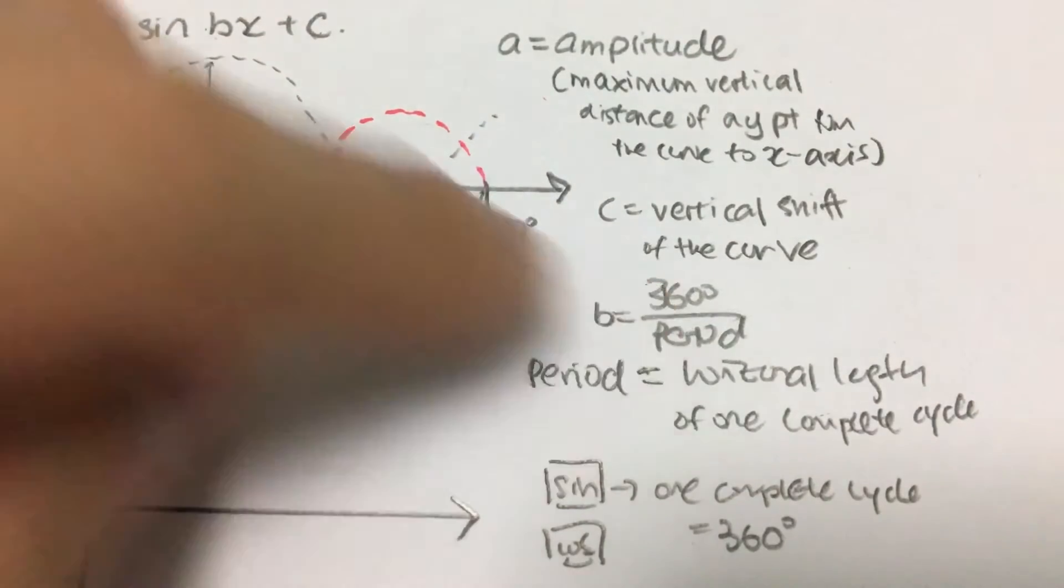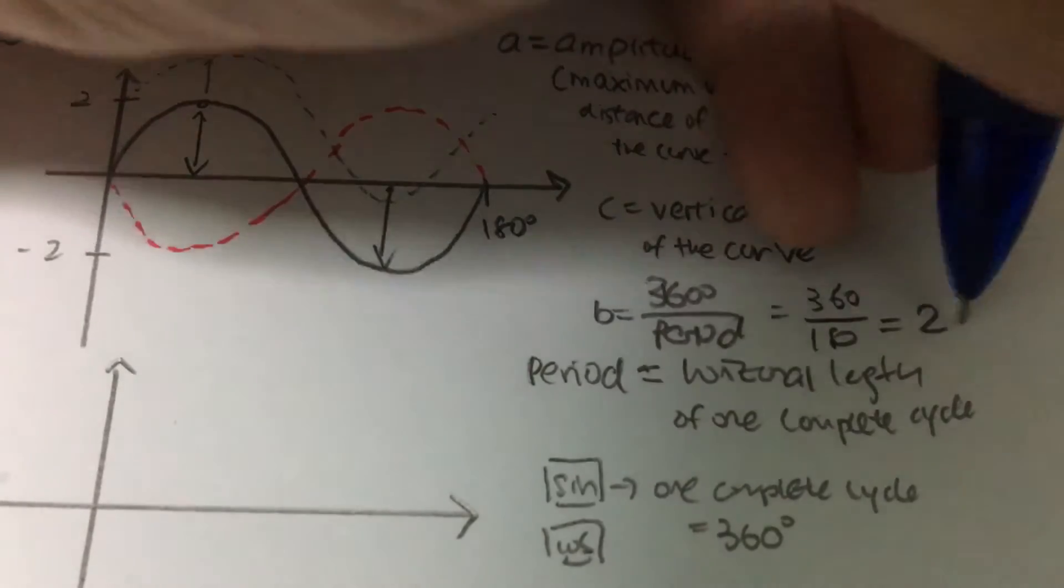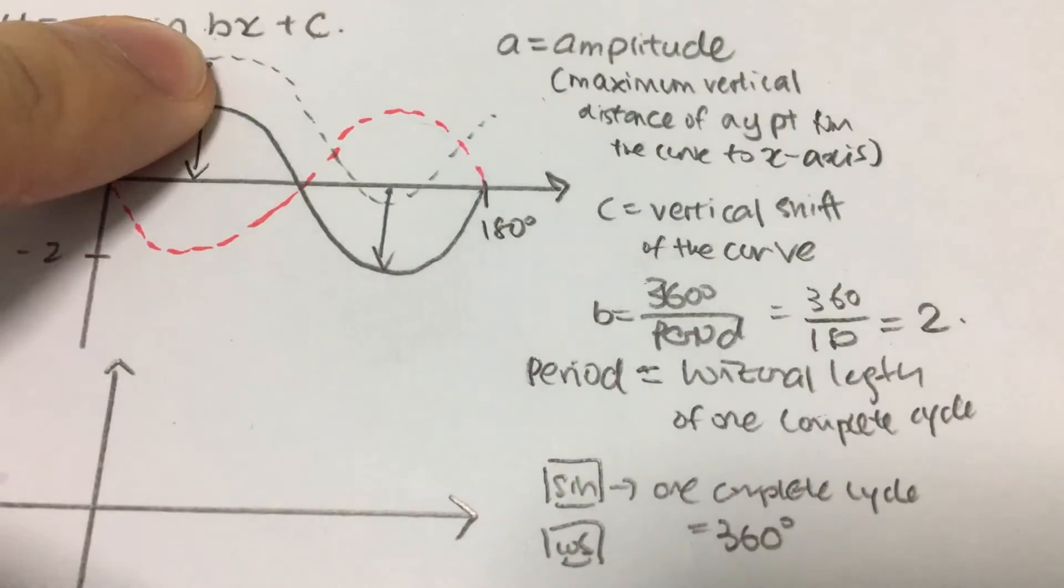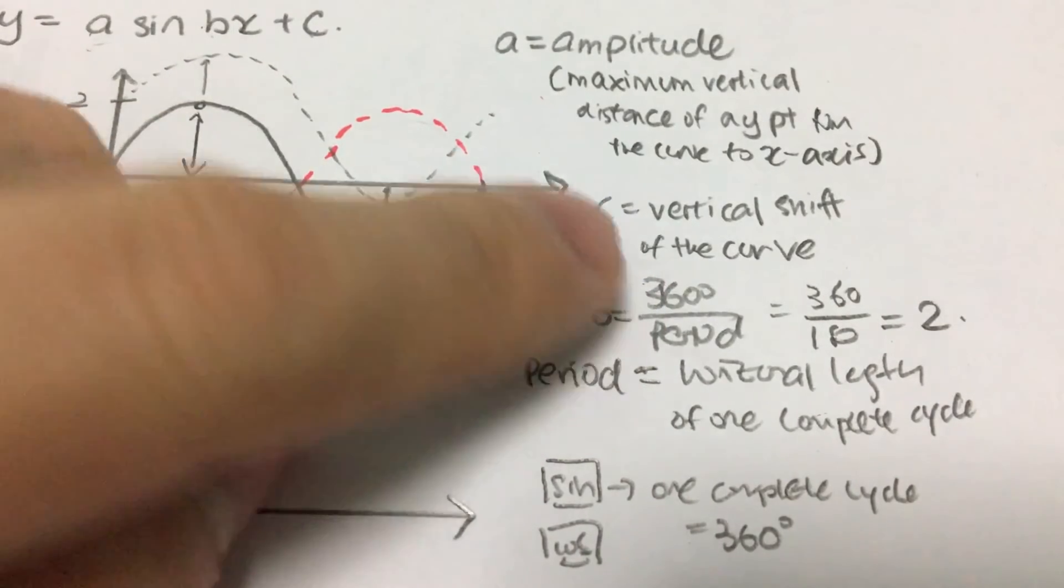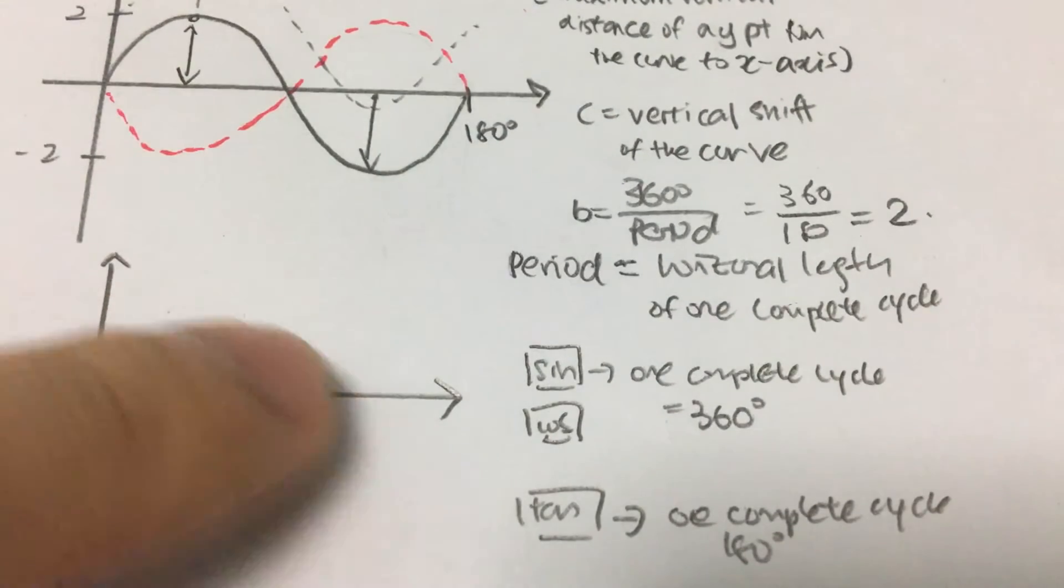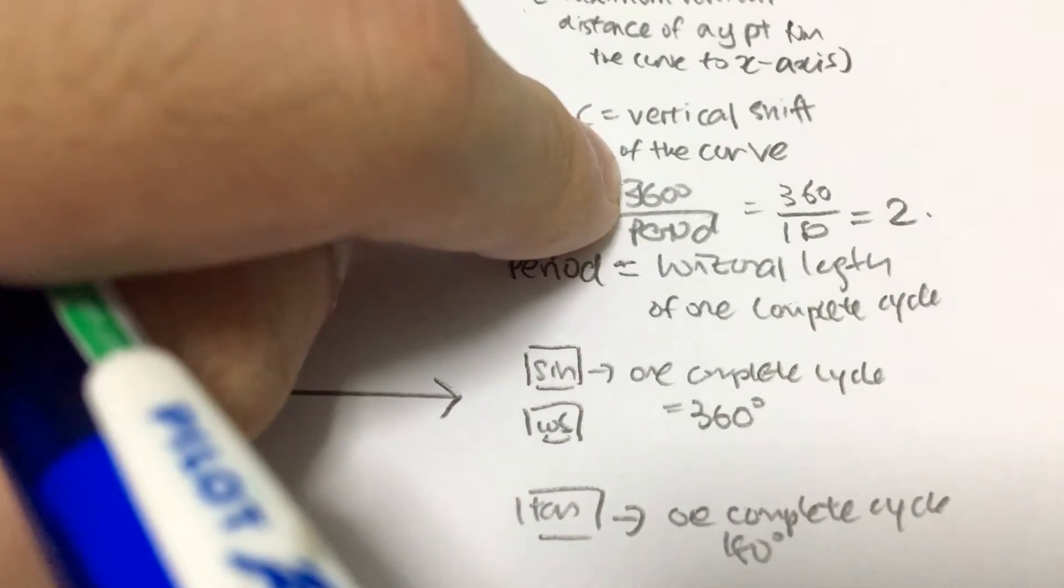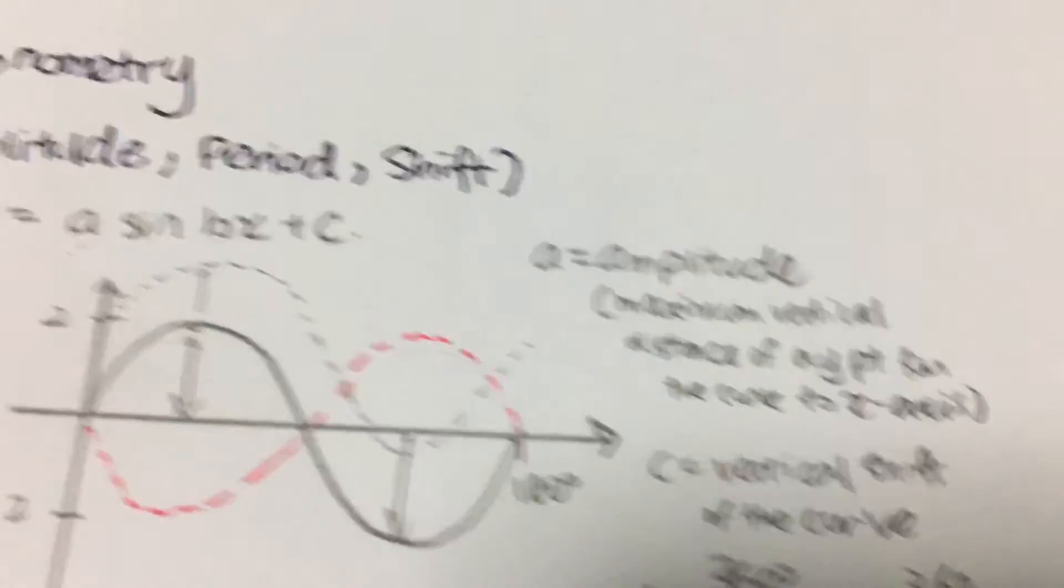So always remember, in order to find b itself, basically you have to take the 360 for sine and cosine over period. But if it is tangent, one complete cycle is 180, so 180 over the period. That's about it for this video itself.